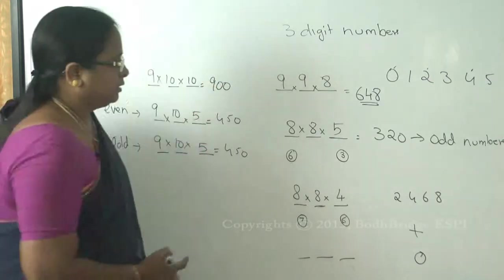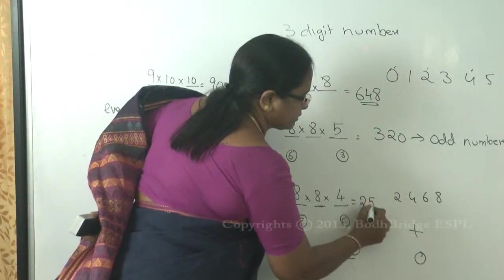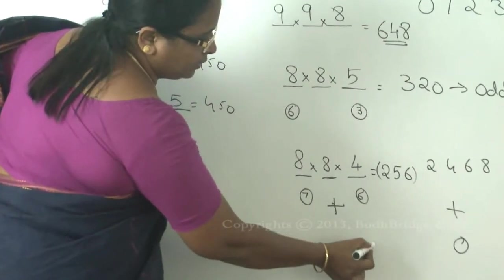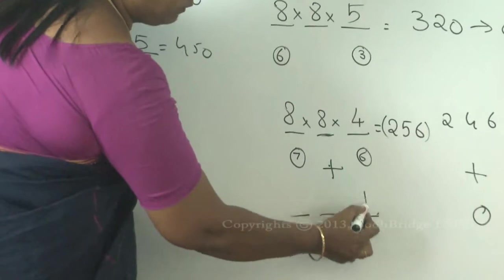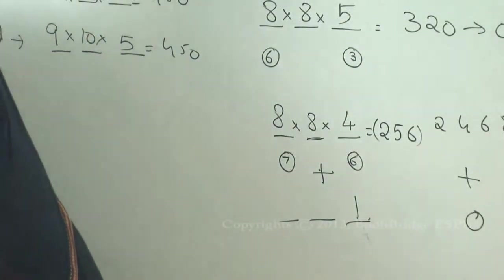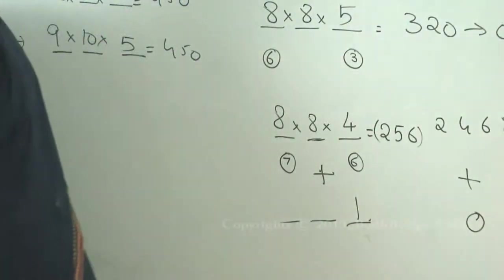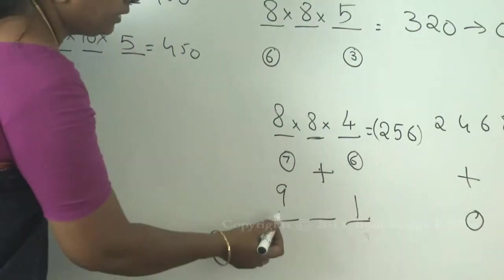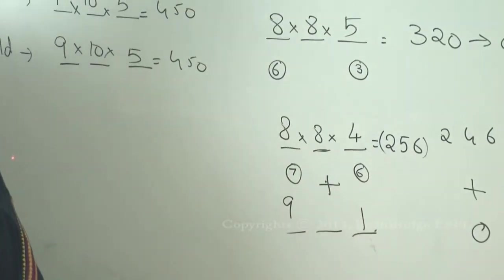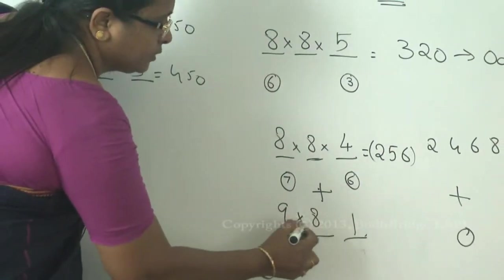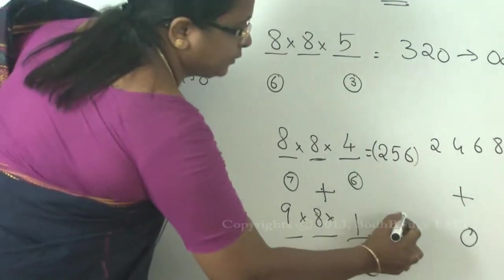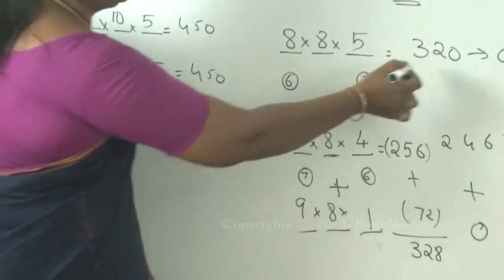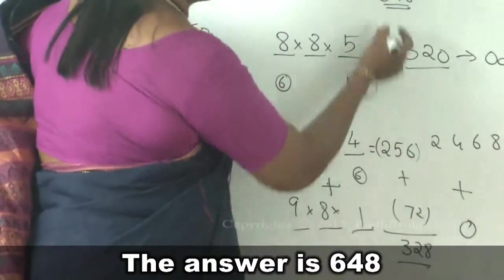For the case where the last slot is zero: there is only one way to fill it. Zero is removed from the pool, leaving nine digits eligible for the first slot — nine ways. Two slots are filled, leaving eight digits for the middle slot. So this gives nine into eight into one = 72. Adding both cases: 256 plus 72 = 328 even numbers. Verification: 320 odd plus 328 even equals 648 total, which is correct.